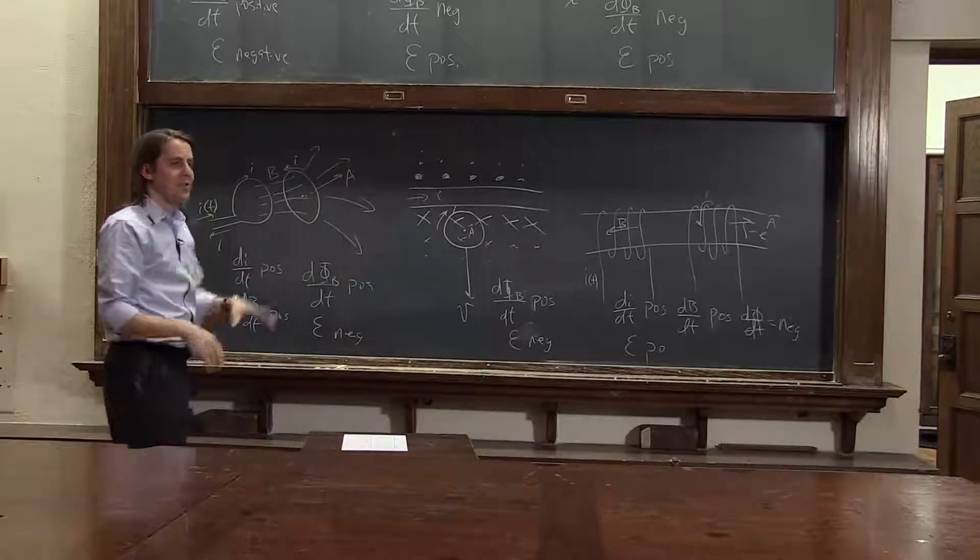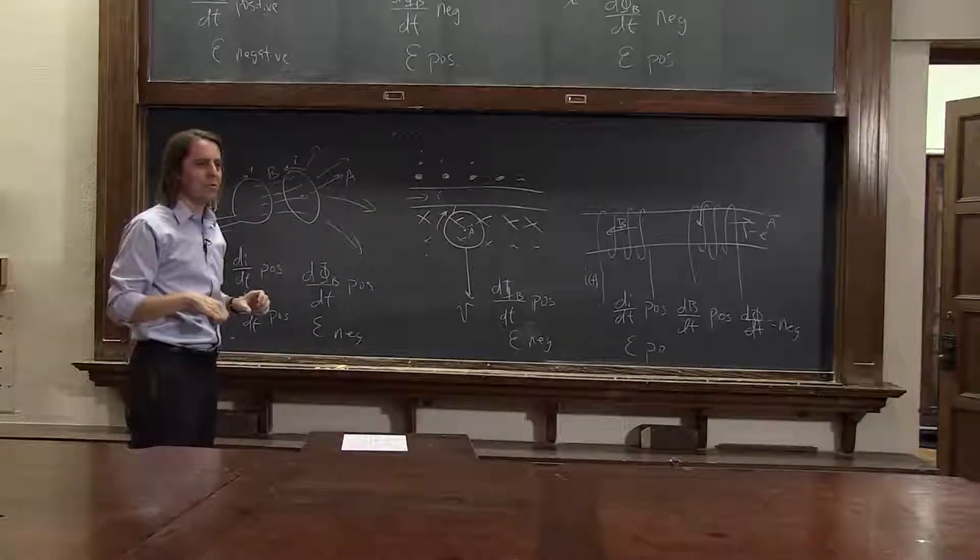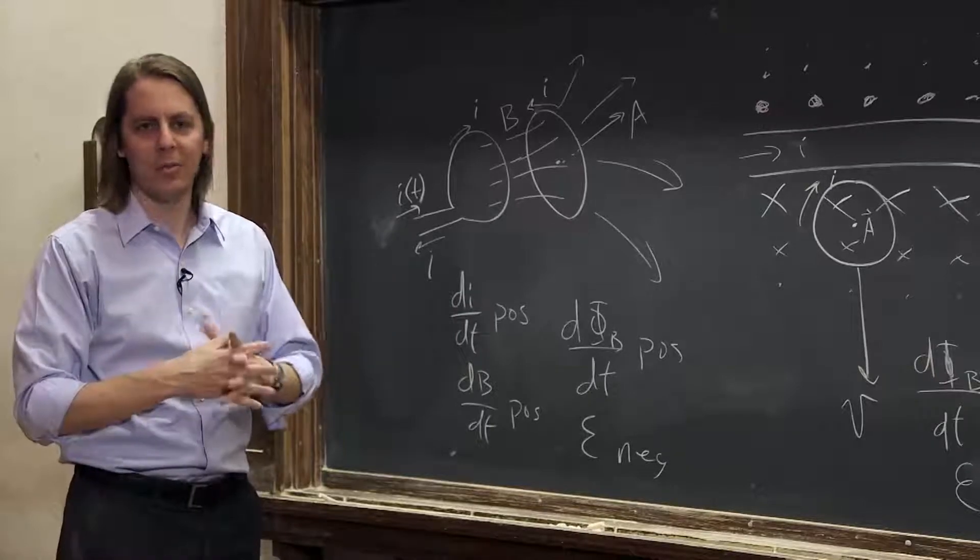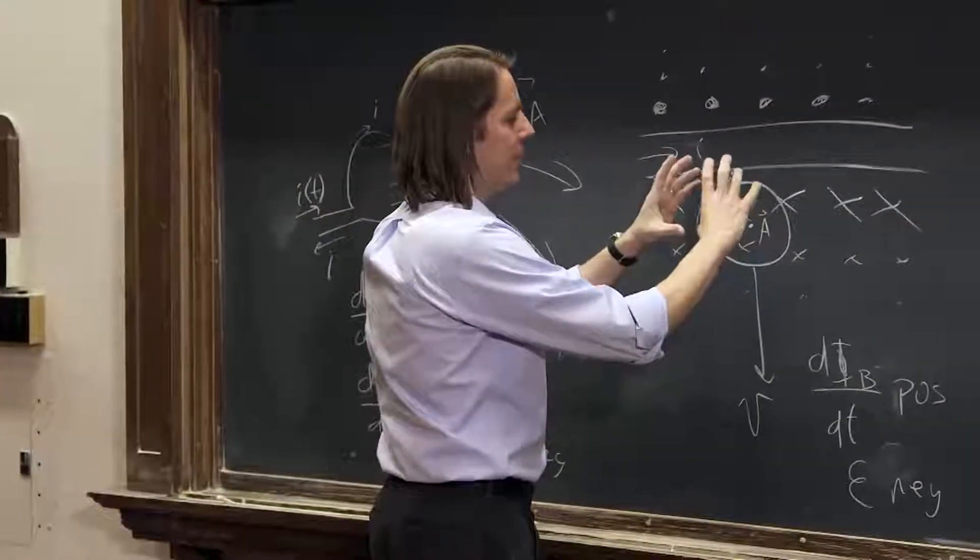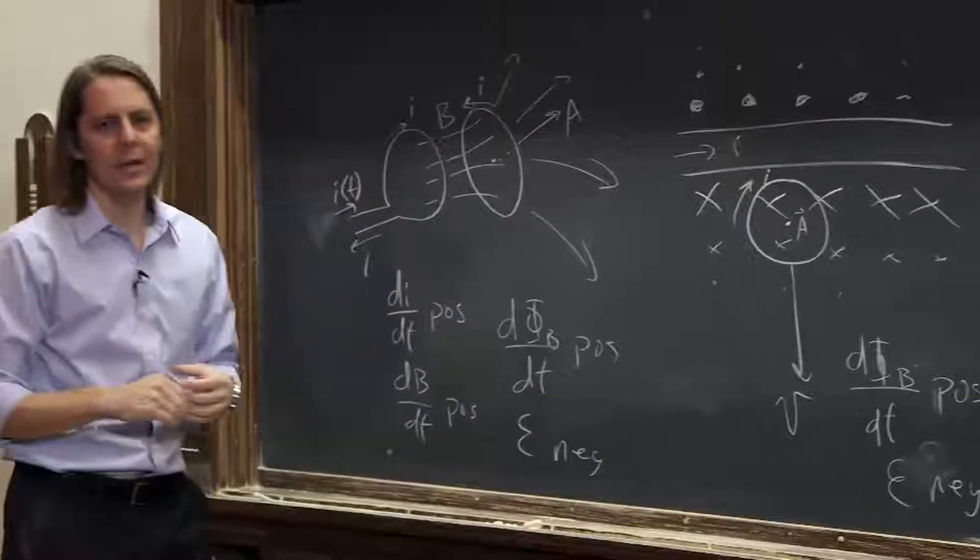So the point of all this is it's not just a permanent magnet going through a loop. You can do all kinds of different setups. Any time you have the magnetic flux changing in a loop, you'll get an EMF.